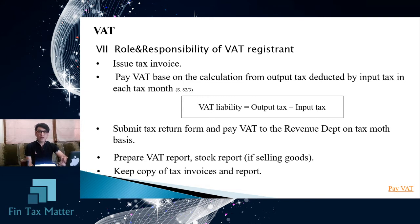For example, for the head office they prepare one set of reports: the input VAT report, output VAT report, and stock report if any. If they have another place of business — for example, branch number one — a second set of reports is prepared for that branch: output VAT, input VAT, and stock report. This report is prepared monthly and by place of business, so the number of report sets equals the number of places of business.